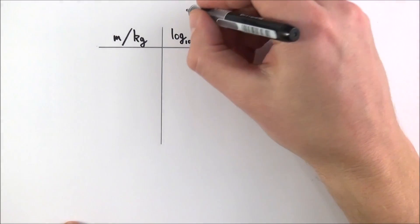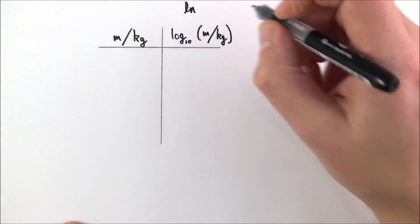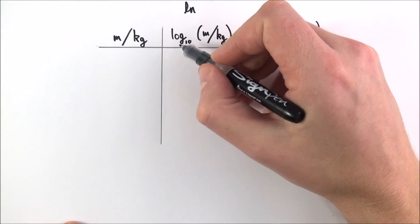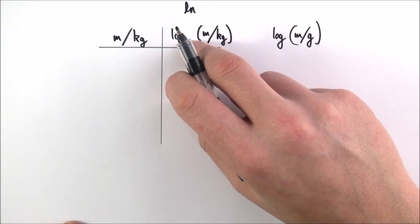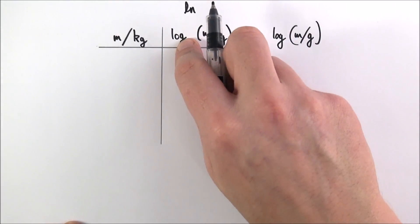Also, sometimes you might have the natural log, ln, whereas log to the base 10 is what we refer to as log. We're going to stick with this at the moment.